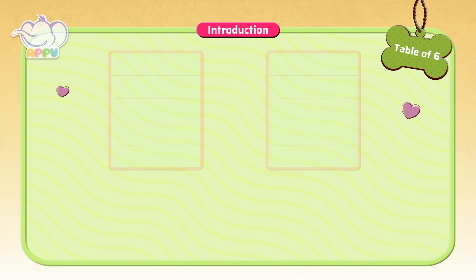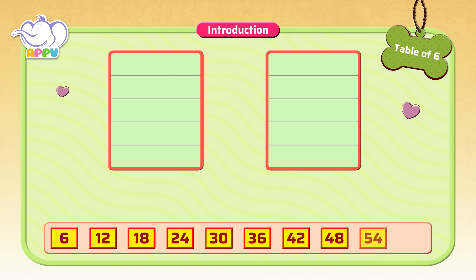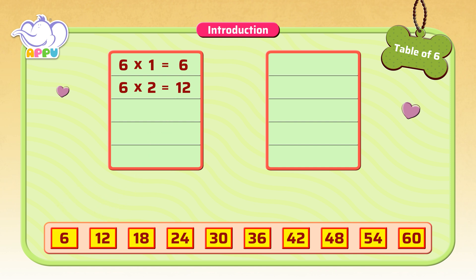Now let's look at the actual multiplication table of six. The answers are exactly from the skip counting. So 6 times 1 is skip counting by 6 once, which equals 6. 6 times 2 is skip counting by 6 two times, which equals 6, 12. 6 times 3 is skip counting by 6 three times, which equals 6, 12, 18.